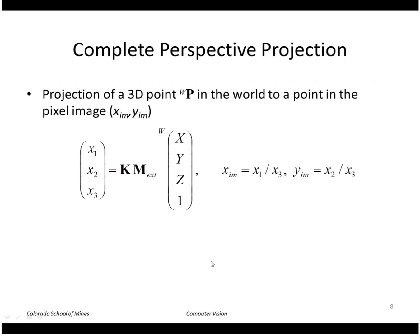The complete perspective projection in general: if we have a point in world coordinates and want to project it to the image, we multiply by the extrinsic camera parameter matrix, then by the intrinsic parameter matrix K, and then divide through by the third element.